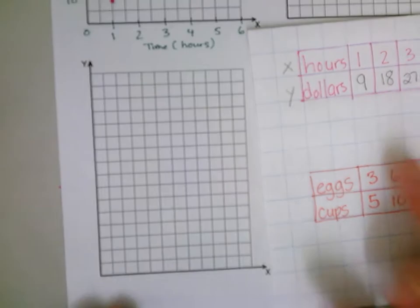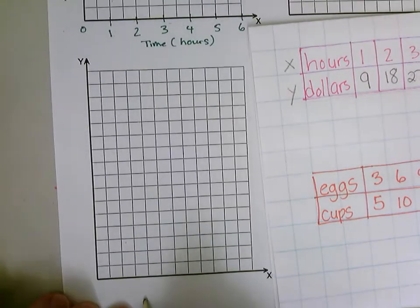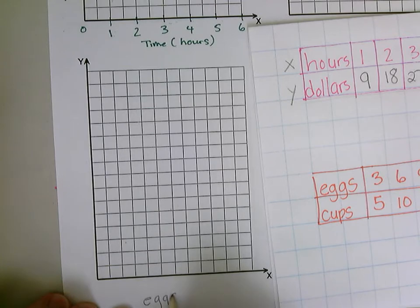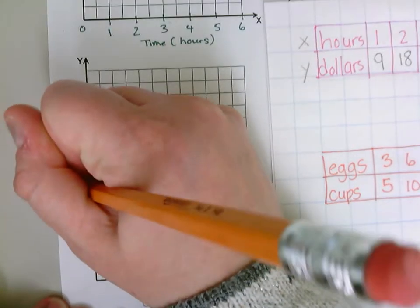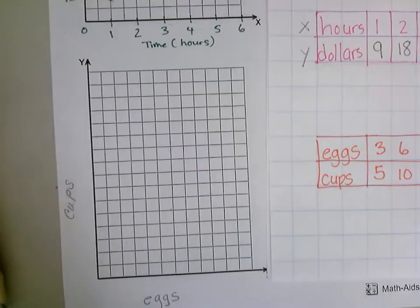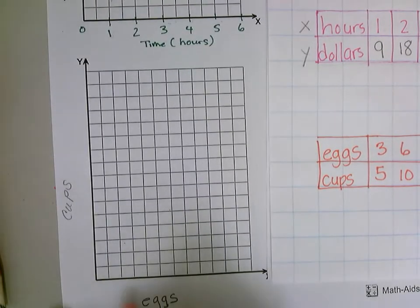I'm going to label my coordinate plane. Down here I'm going to have eggs, and over here I'm going to have cups.